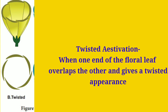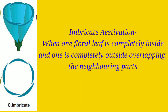In imbricate aestivation, one floral leaf completely overlaps the ends of two neighboring floral leaves, one floral leaf is completely outside without overlapping, and the rest have one end overlapping. In simple words, one petal will be completely towards the inner side and one petal will be completely towards the outside of the whole arrangement, while the remaining petals are partially overlapping, similar to the twisted arrangement.